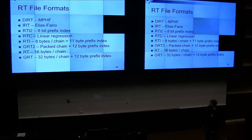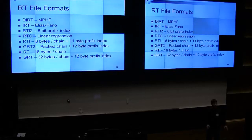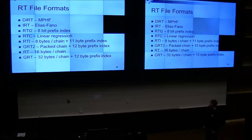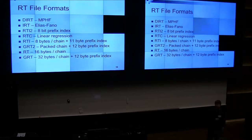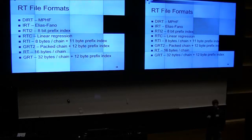Then there's IRT2 — that's improved. Prefix index, eight bits — that's currently the best file format to use because it's the smallest. Then Rainbow Crack came up with a format — I think the C means compressed or compact — they use linear regression on the endpoint and store the error between the linear regression line and the actual endpoint.